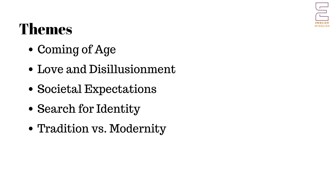Themes. Coming of age: Chandran's journey from a carefree college student to a mature individual. Love and disillusionment: explores young love and the pain of rejection. Societal expectations: the influence of societal norms on individual choices, especially regarding caste and marriage. Search for identity: Chandran's quest to find his place in the world. Tradition versus modernity: the conflict between traditional Indian values and the influence of Western education and lifestyle.